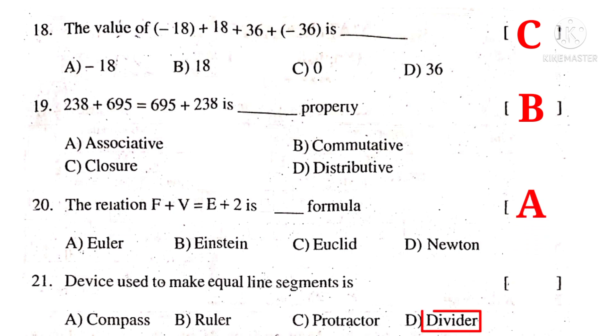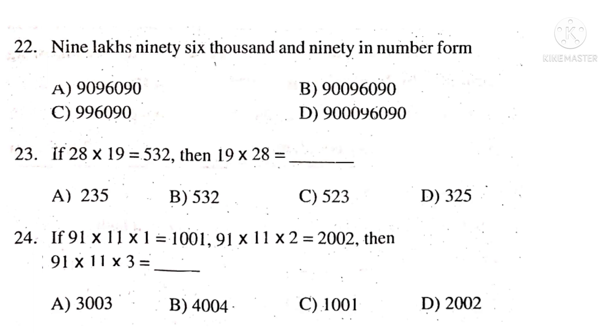Device used to make equal line segments is divider. So the correct choice is D. 22nd: 9,96,090 in number form. There is no 100. So 996,090. So the correct choice is C.